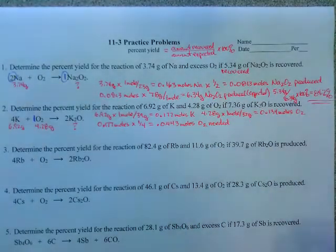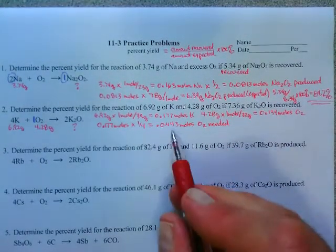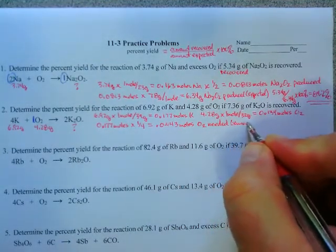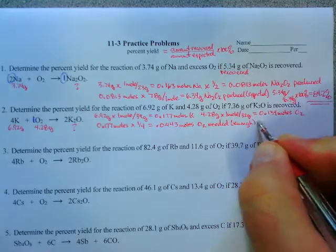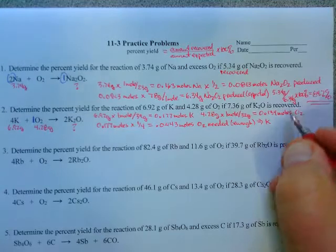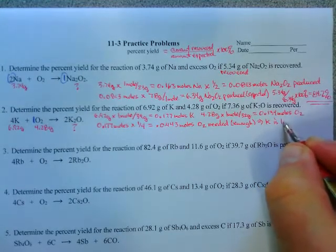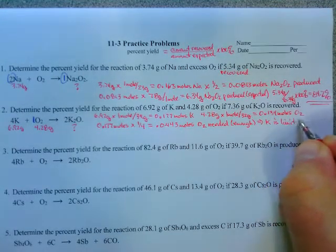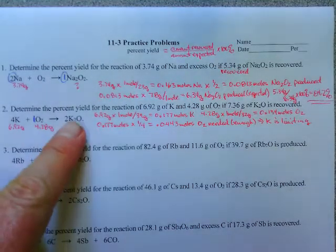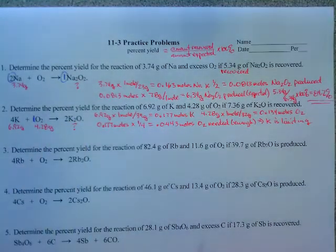Now we have 0.134, so we have enough. So that means the other one, in this case the potassium, is limiting. So the potassium is the one we'll use to figure out how much potassium oxide we actually make.